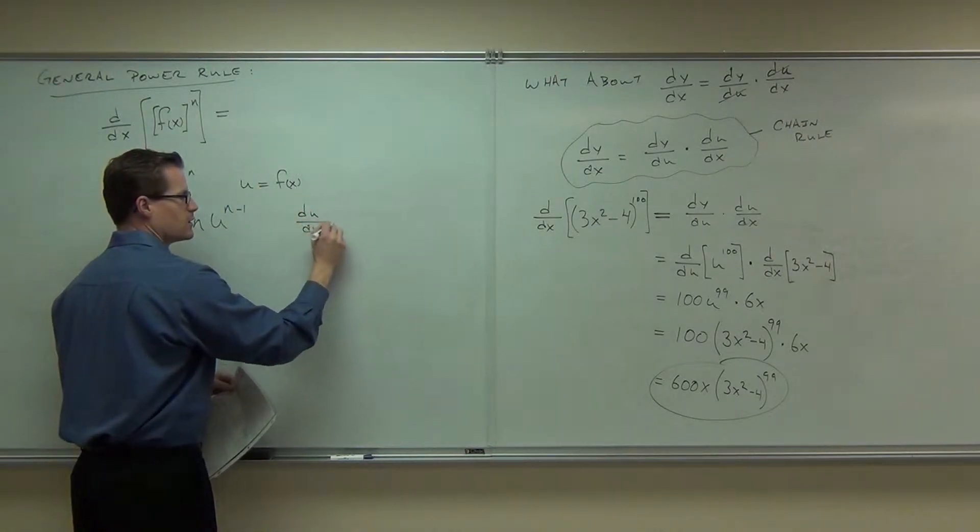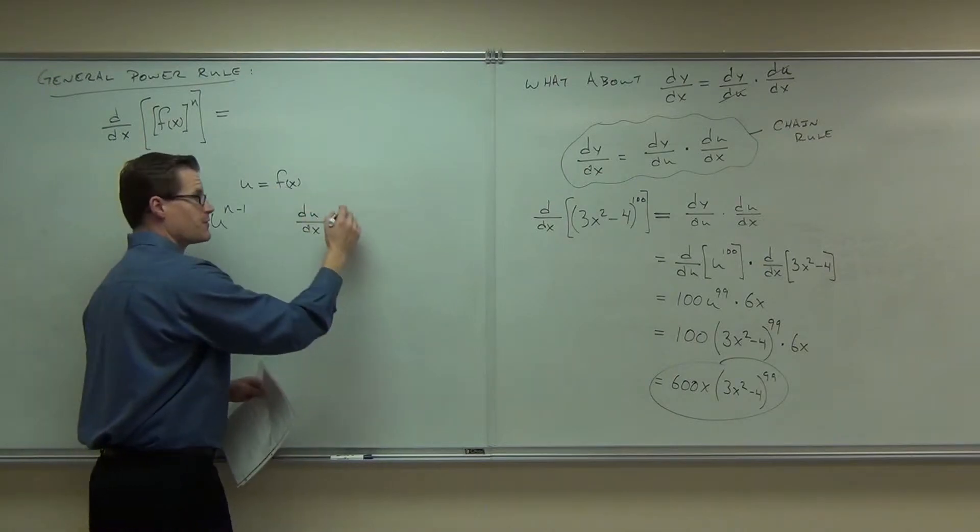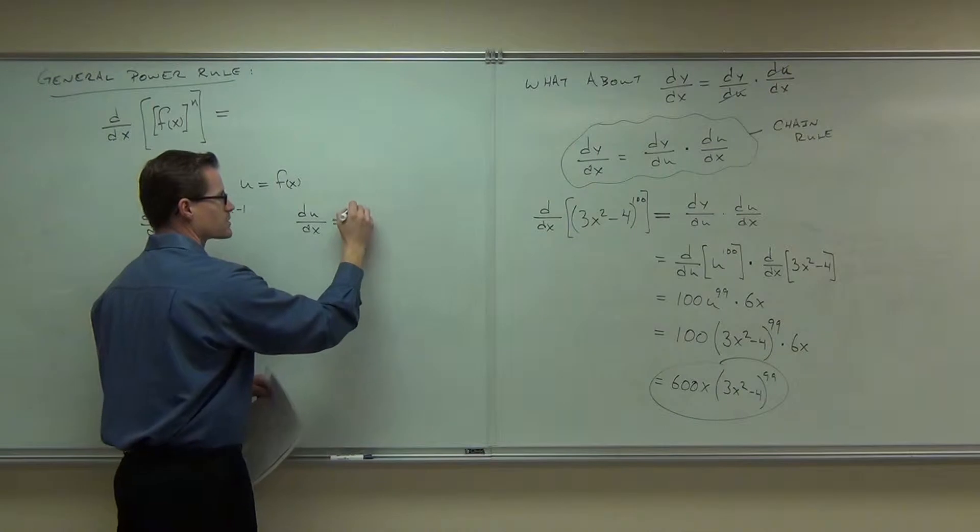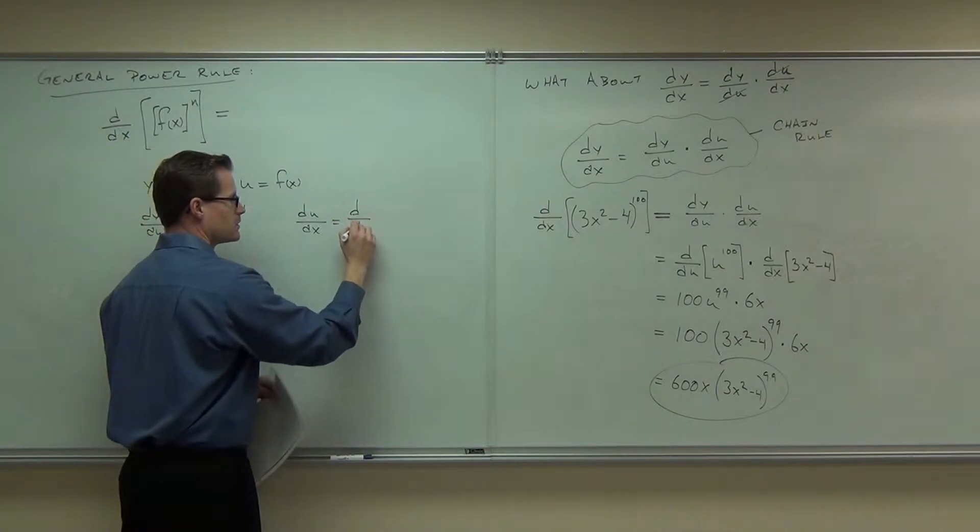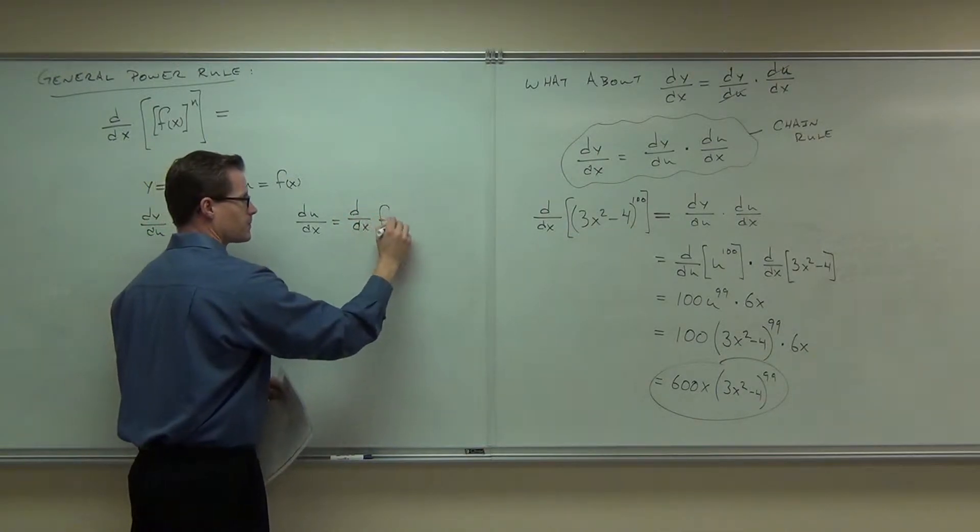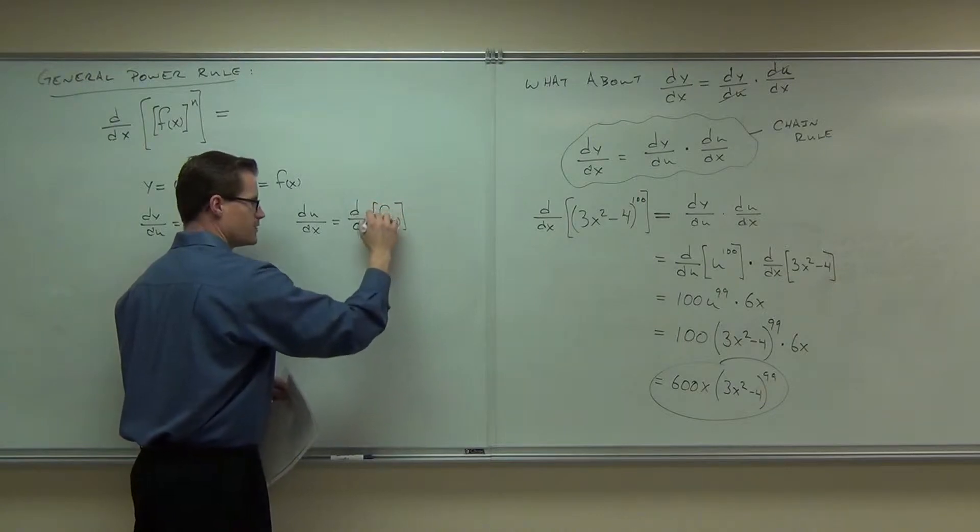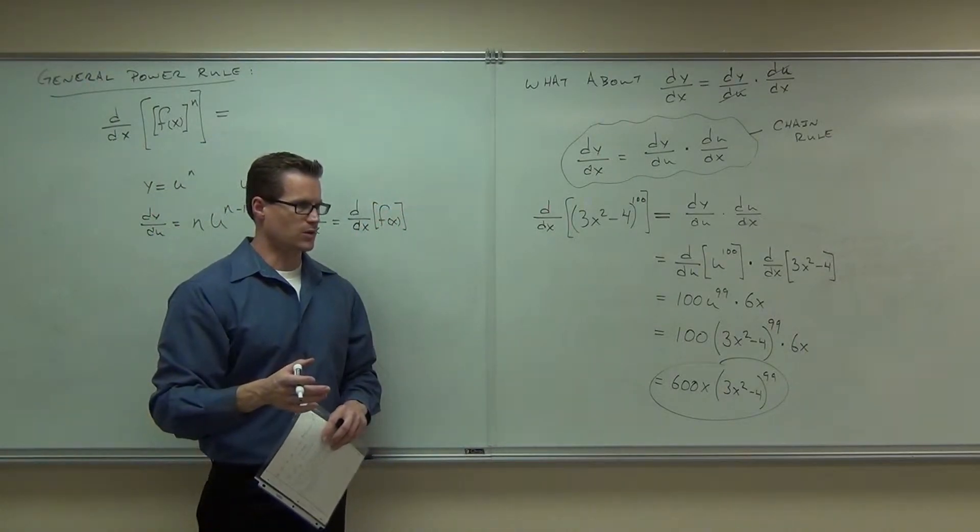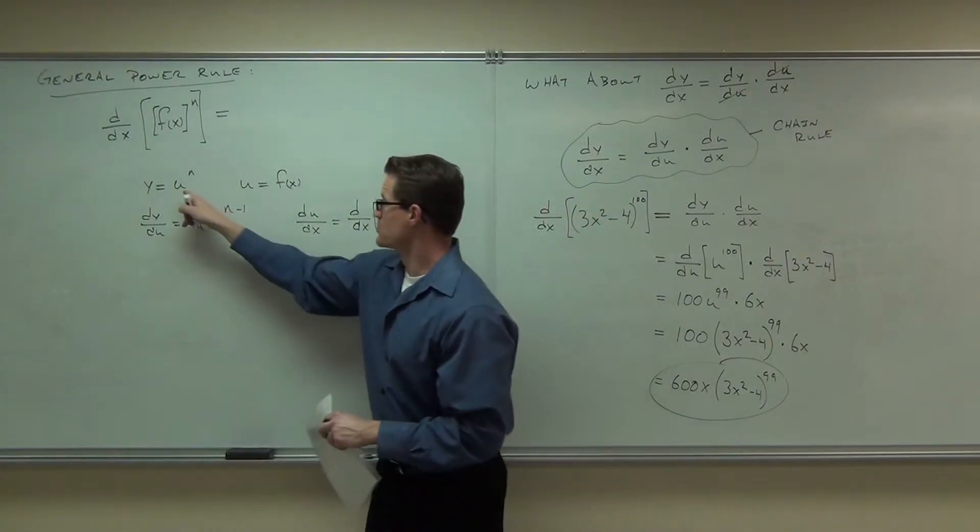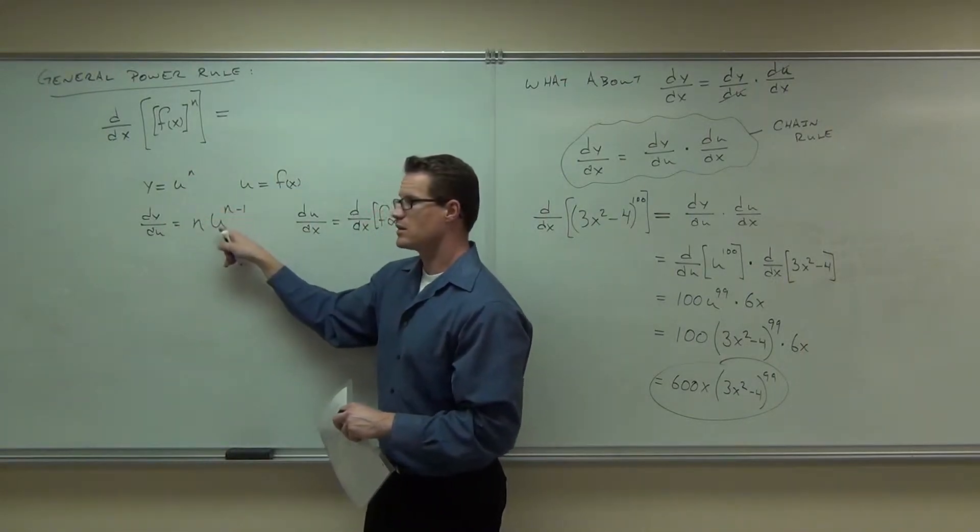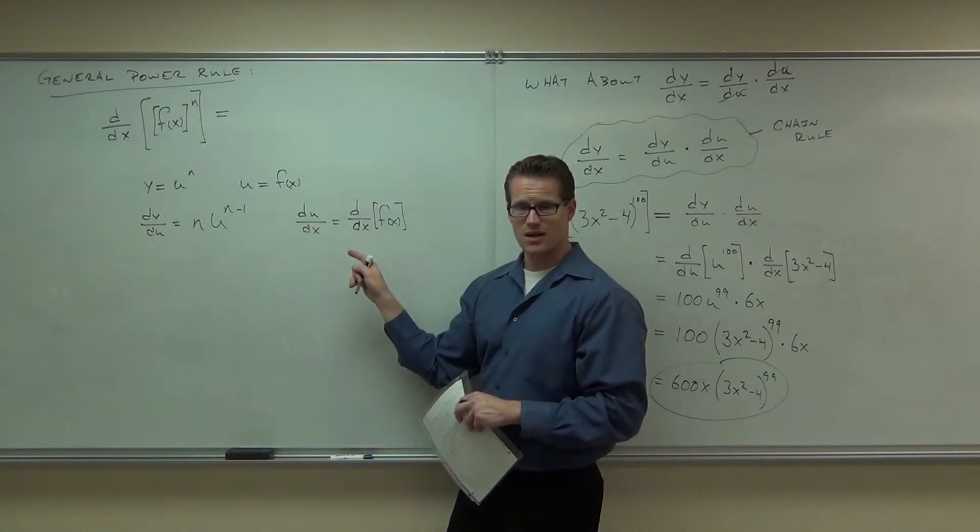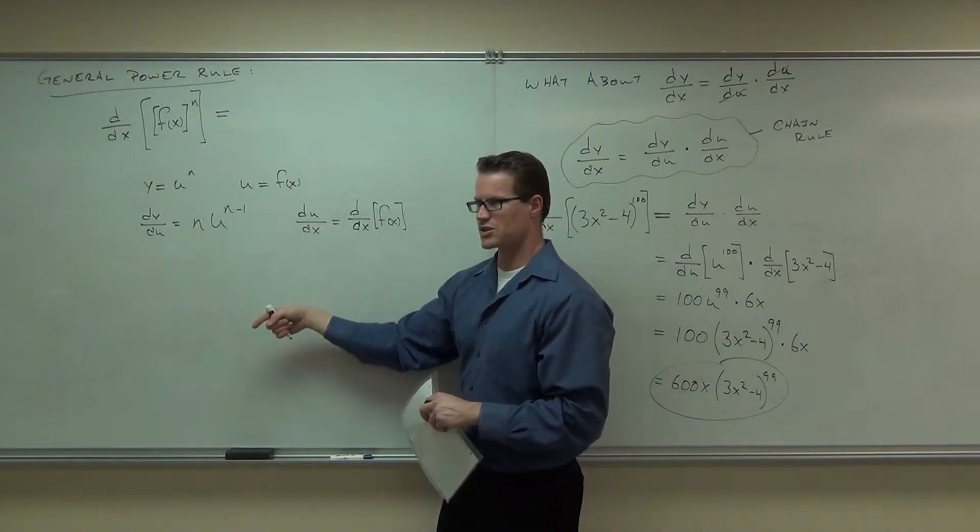Du/dx would be the derivative of f of x. I'll just say the derivative of f of x. You could write f prime of x. Are you guys okay that the derivative of u to the n is n times u to the n minus 1, and the derivative of f of x is the derivative of f of x?